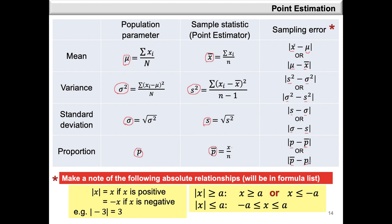Let's take a look at some absolute value relationships. The absolute value of X is equal to X if it's positive, or negative X if X is negative. For example, the absolute value of negative 3 is positive 3. The absolute value of X being greater than or equal to A means X is greater than or equal to A or X is less than or equal to negative A. And the absolute value of X being less than or equal to A means X is between negative A and positive A, both included.